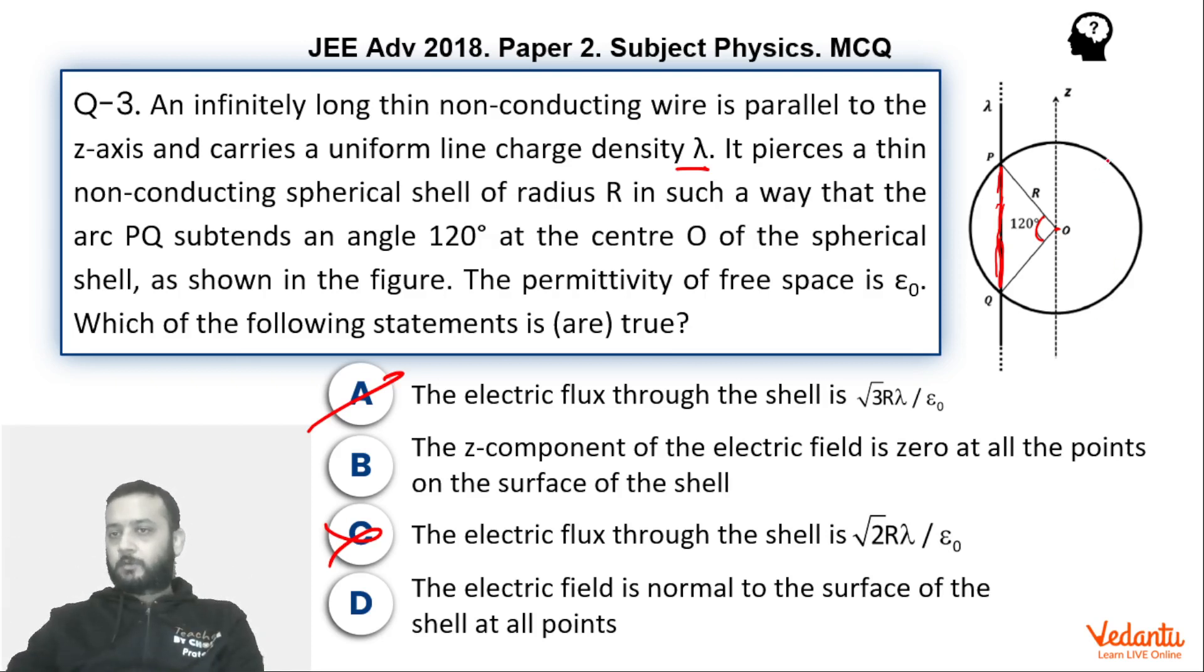If you talk about this point, it will not have any z-component. At this point the field will be in this direction, at this point the field will be in this direction, at this point the field will be in this direction, similarly at this point the field will be in this direction. So you can see it doesn't have any z-component. The z-axis is taken in this direction, so there is no z-component whatsoever. So option B is correct, that component of the field is always zero.